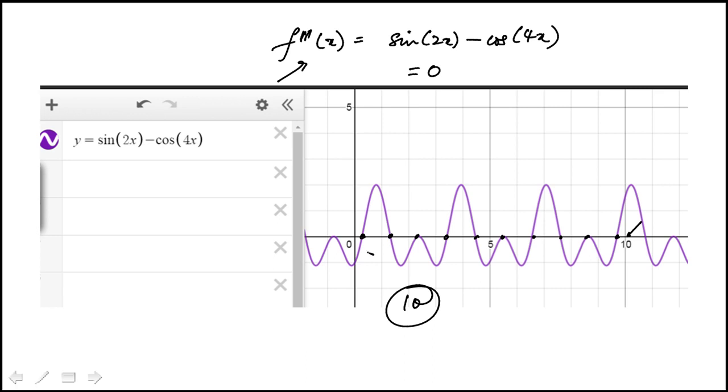So for example here there is a sign change. It's negative it goes to positive. Here positive to negative. Here there is no sign change. It stays negative. So this one is not a point of inflection.